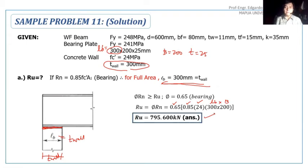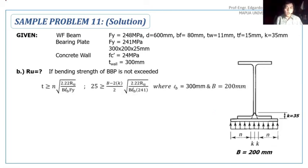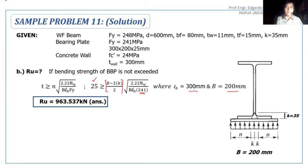How about considering bending? Considering bending, we will use the thickness formula. I used N square inside the radical then took it out, so it became just N. Substitute the thickness of 25mm. The N would be B minus 2K over 2. Then square root of 2.2 Ru B LB times Fy. The Fy is of the base plate which is bending, so 241 MPa. With LB of 300 and B of 200, we substitute those values in the equation. The Ru would be 963.537 kN.